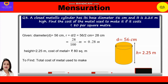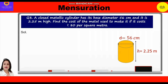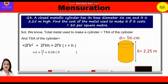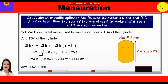Total metal used equals the total surface area of the cylinder. The formula is 2πr² + 2πrh = 2πr(r + h). Substituting: 2 × (22/7) × 0.28 × (0.28 + 2.25) = 2 × (22/7) × 0.28 × 2.53 = 4.4528 m². So the total surface area, which is also the metal used, is 4.4528 m².